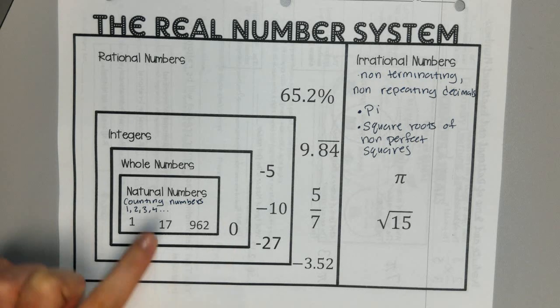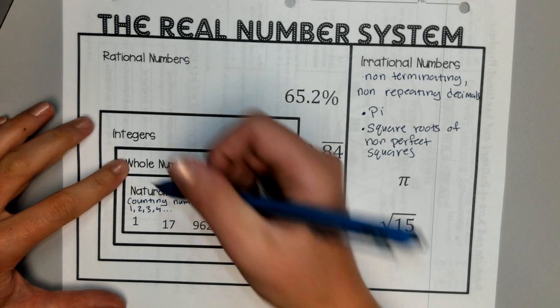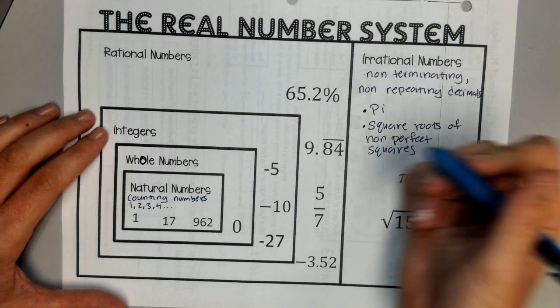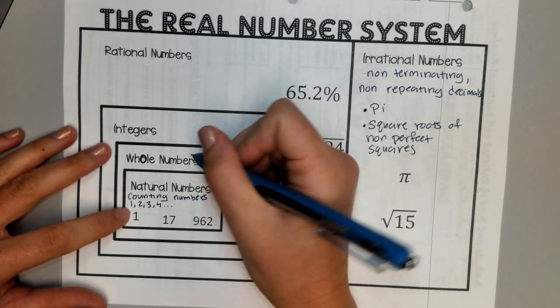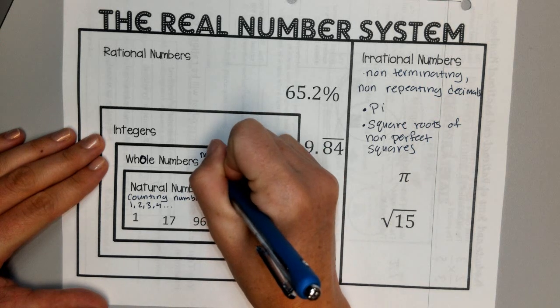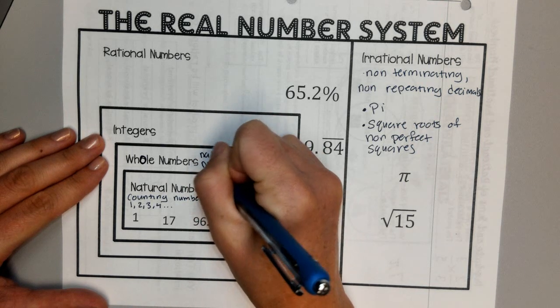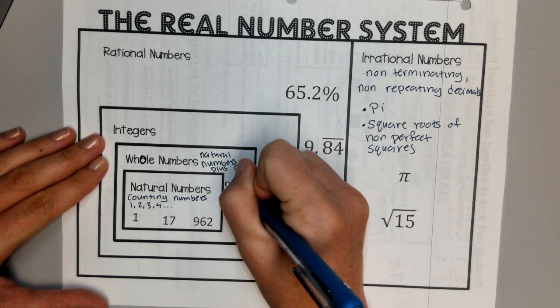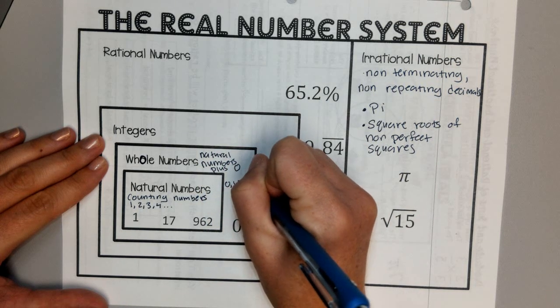When we add 0 to our natural numbers, we get our whole numbers. I remember that because the O in whole is like a 0, so they are natural numbers plus 0. So they go 0, 1, 2, 3, 4, and up.